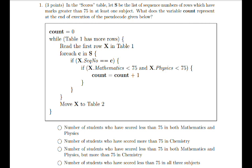So, if the math's marks or the physics marks were greater than 75, it would just exit the loop and then move the x to table 2. Which means that count is only incremented if the marks in mathematics and the marks in physics is less than 75, which only leaves one subject to be greater than 75, that is chemistry.